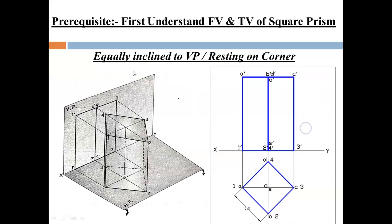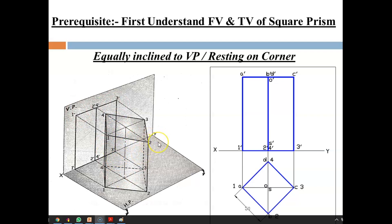Before proceeding to the example, first understand there are two conditions of placing the prism. The first one is equally inclined to the VP, or resting on a corner. While reading the question you must find these words in order to draw the top view correctly. In this case, faces one-four and four-three are equally inclined to the VP at 45 degrees, and similarly one-two and three-two make the same angle with the VP. If the prism is tilted to make a certain angle with the horizontal plane while keeping the axis parallel to the VP, the whole prism turns around corner three — that is why it is called resting on a corner condition.